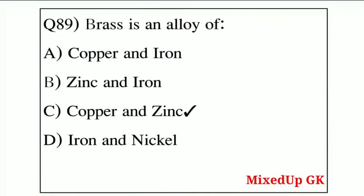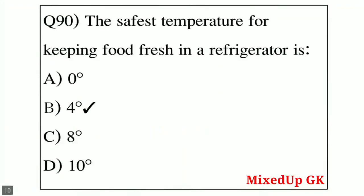Question number 89: brass is an alloy of — Option A: copper and iron, Option B: zinc and iron, Option C: copper and zinc, Option D: iron and nickel. The correct answer is Option C — copper and zinc.